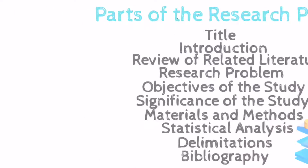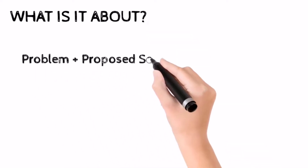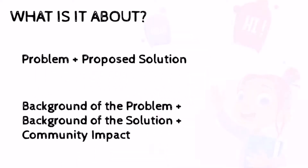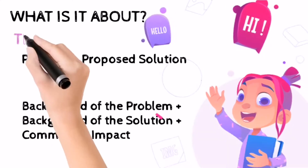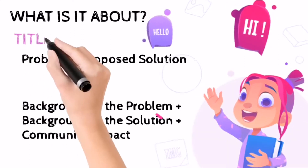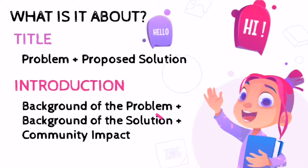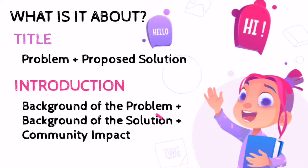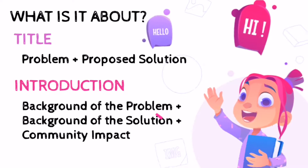What is it about? The title and the introduction should be able to answer this question. The title consists of the problem and the proposed solution, while the introduction consists of a background about a problem, background about a proposed solution, and about the community impact. This is the part where you need to cite some references to prove that there is a problem that needs to be addressed.